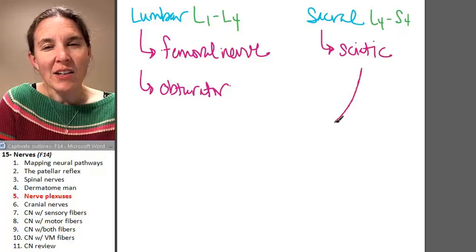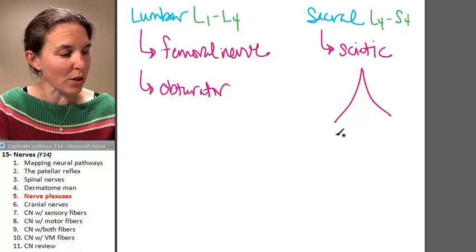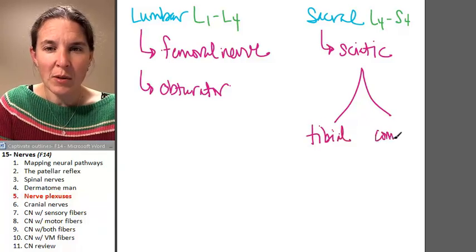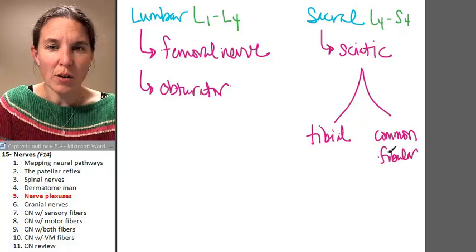The sacral plexus contributes fibers to the sciatic nerve. And the sciatic nerve, you're probably already aware of this, actually splits into two nerves. And it's the tibial nerve and the common fibular nerve.